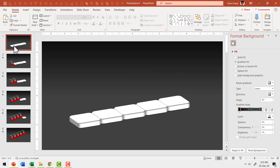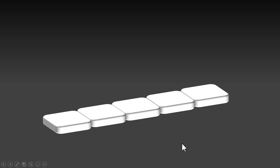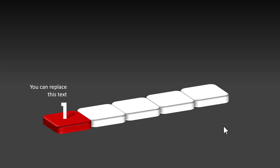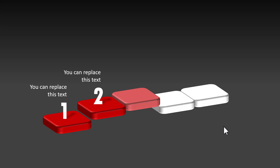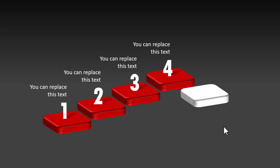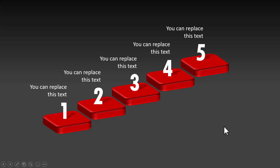Now when I go to the first slide and go to Slide Show, you can see the beautiful animation. I'll start my explanation by saying there are five steps to growth. The first step is this — then on a click I show the second step, the third step, the fourth step, and the final step.